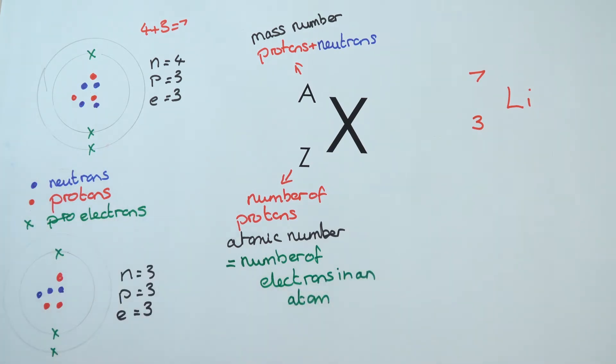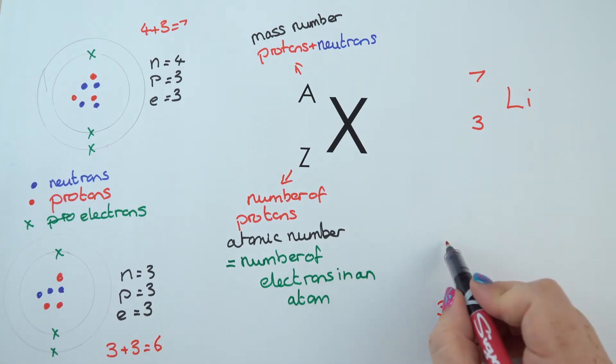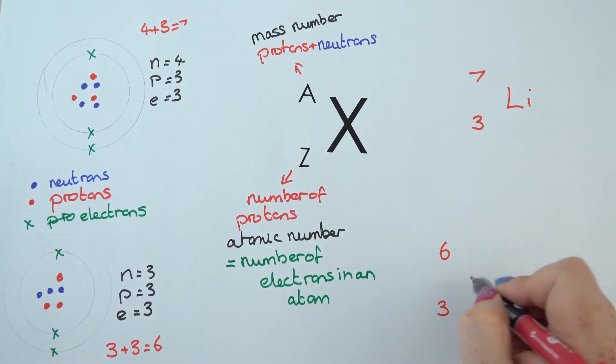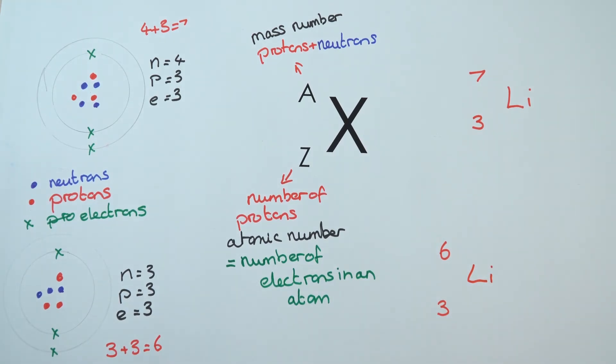Now this second atom down here again has three protons, the neutrons are three, the electrons are three, giving a mass of six. Now it is the proton number, the atomic number, that tells us the identity of an atom. So this one, it's also lithium, it's just lithium that doesn't weigh quite as much.